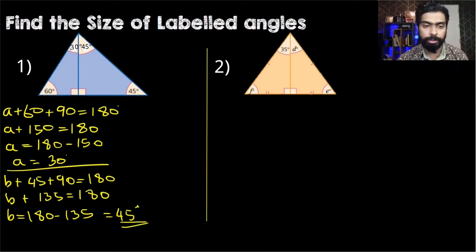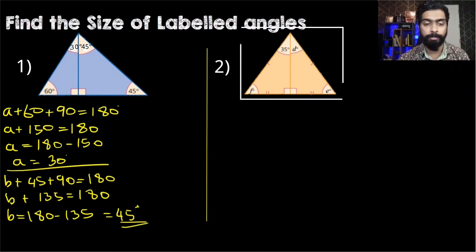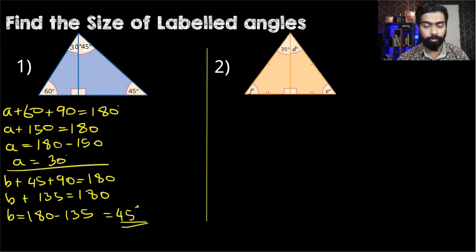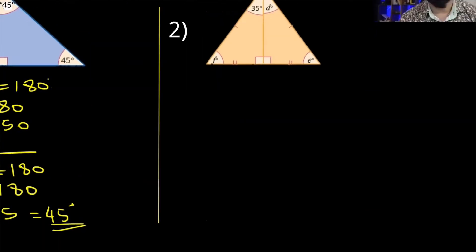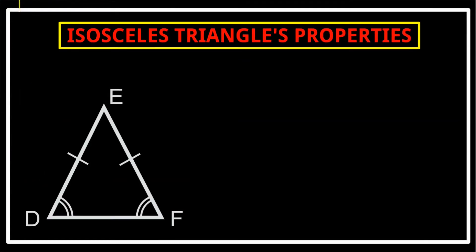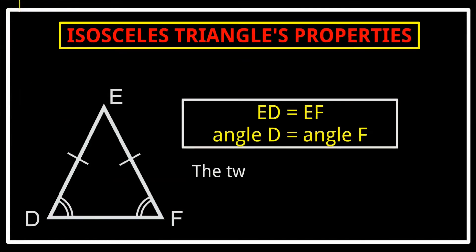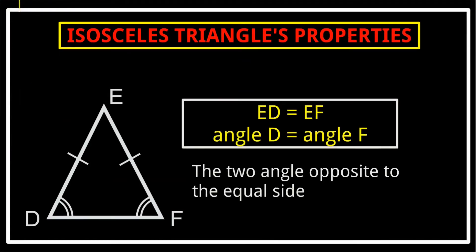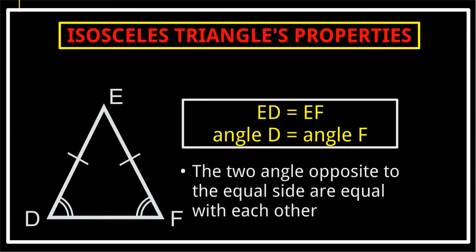Now let's go ahead to question number 2. In question number 2 we will also be using the knowledge of isosceles triangles. In an isosceles triangle, two sides will be equal and two angles will be equal. The angles that are equal will always be opposite to the equal sides — I did say too many equals there, didn't I.